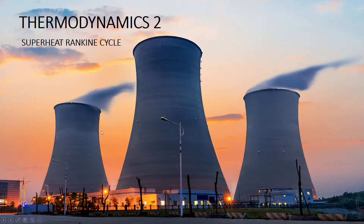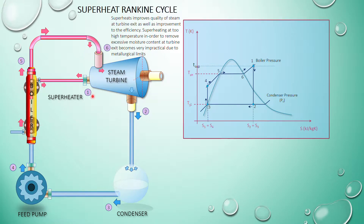Here we have the superheat Rankine cycle. Comparing to the earlier basic Rankine cycle, what you have here is a superheater. The steam from the boiler, as it enters the turbine, will be sent back to the boiler for superheating, and after that it will be sent to the steam turbine.